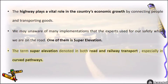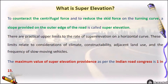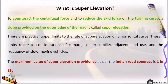The term super elevation is used in both road and railway transport, especially in curved pathways. To counteract the centrifugal force and to reduce the skid force on the turning curve, a slope provided on the outer edge of the road is called super elevation.